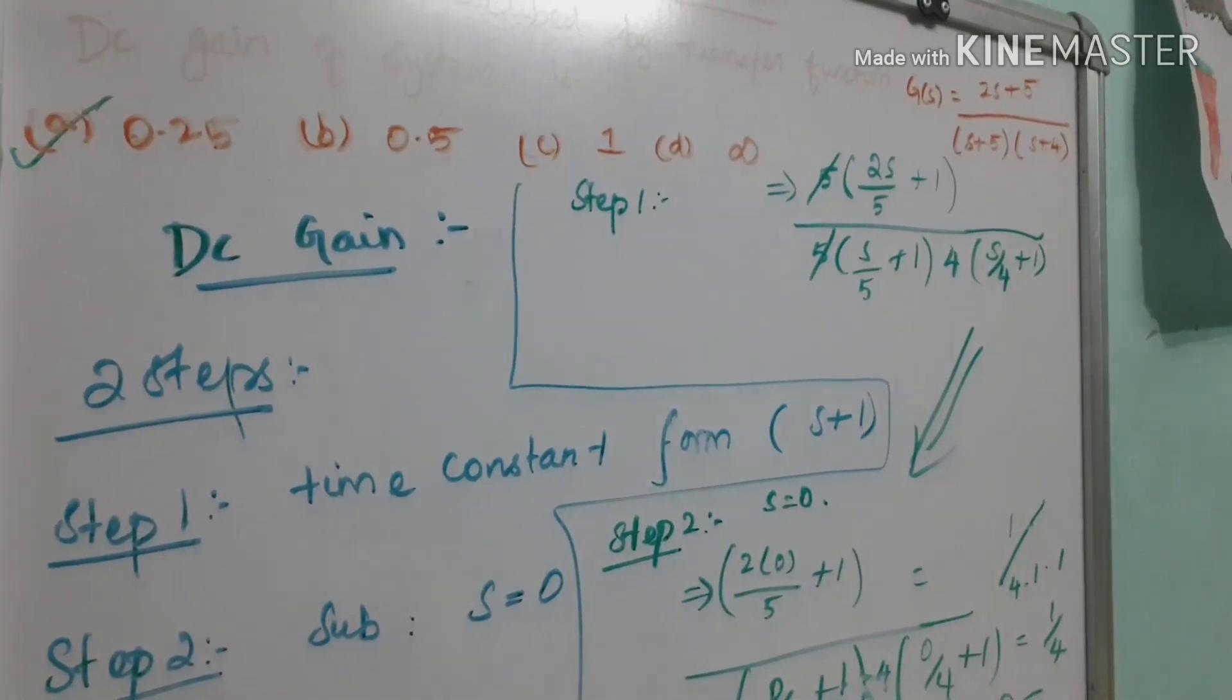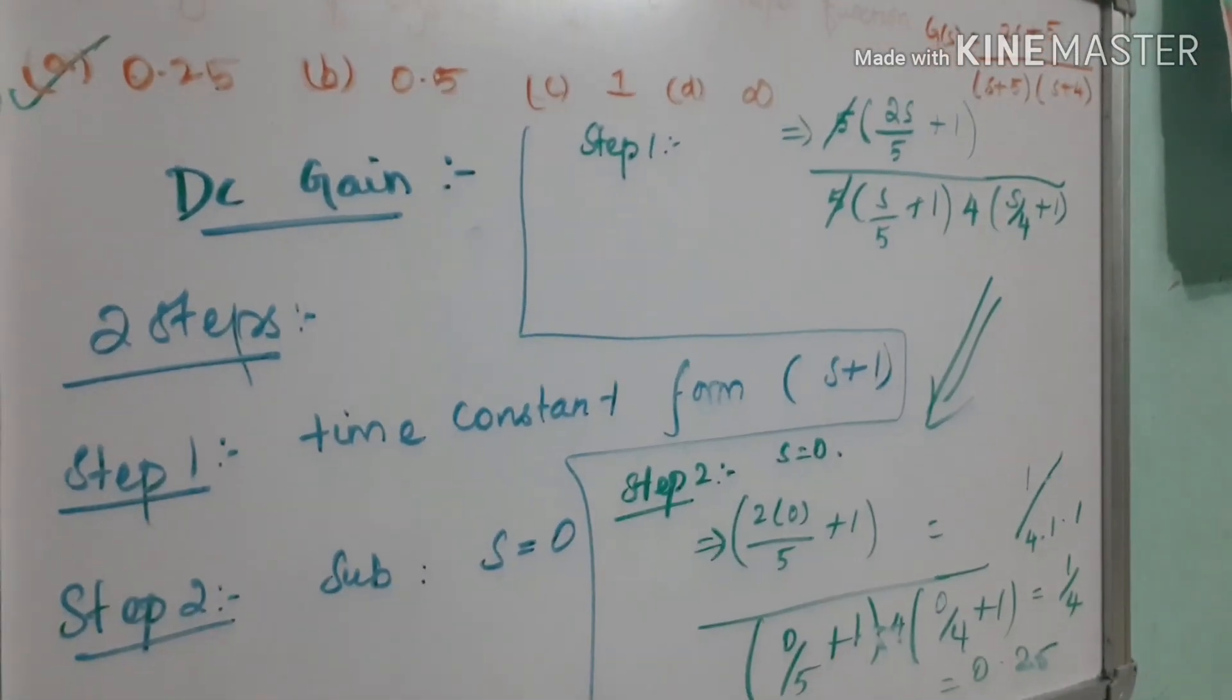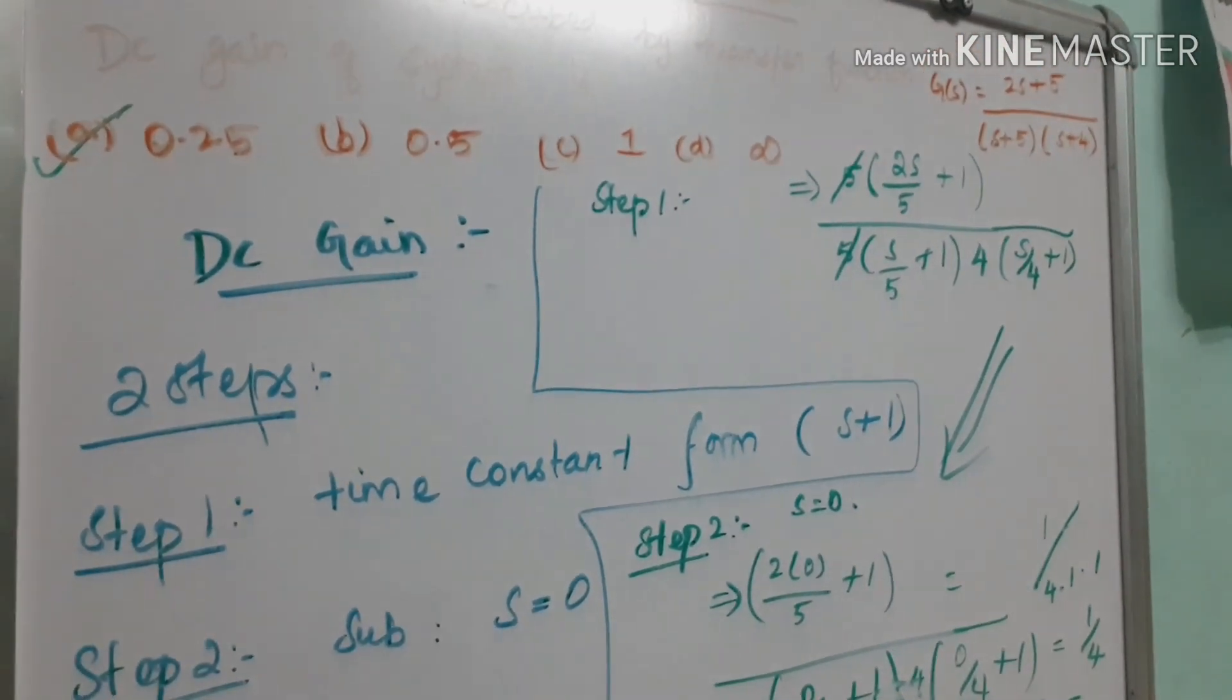Finally, the DC gain of the system is option A, 0.25, that is 1 by 4. Thank you.